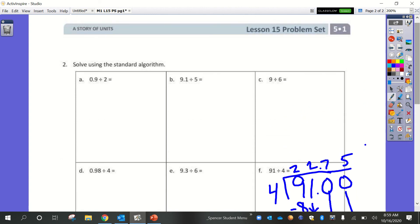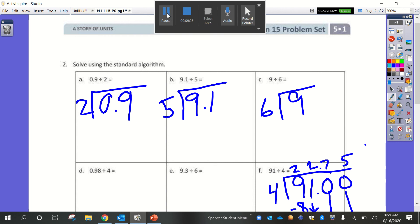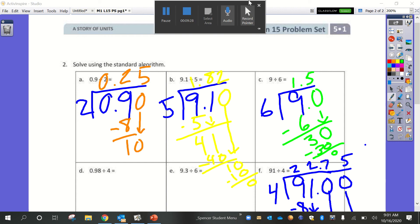Now I would like you to try solving a, b, and c on your own. I'll set them up for you: 0.9 divided by 2, 9.1 divided by 5, and then 9 divided by 6. I'm going to press pause, you're going to press pause, meet me back here in a few minutes when you're done solving these problems. Now that you've gotten those done please go ahead and check your work. You can see I changed colors on every problem so you could see the steps that I took after I set up the math problem. Go ahead, finish the problem set if you need to, or if you'd like to, but you can now go on to your exit ticket.